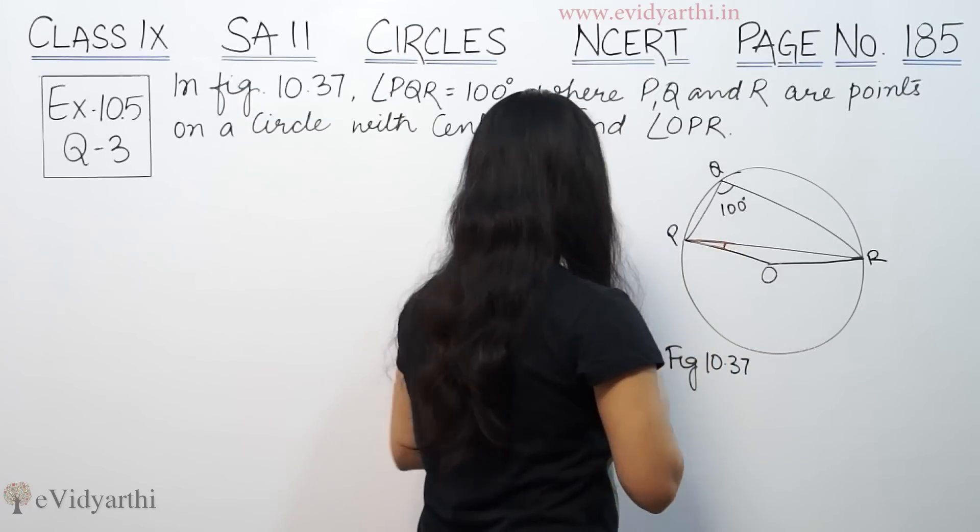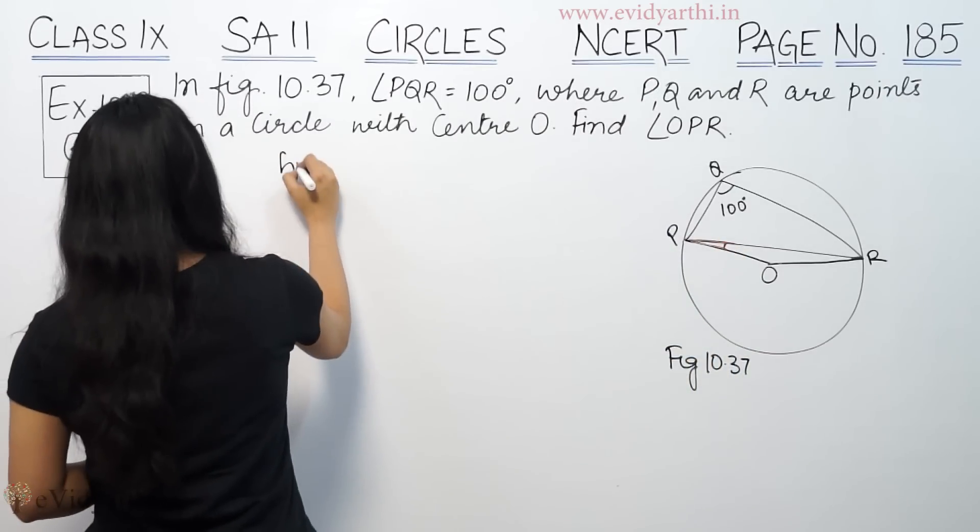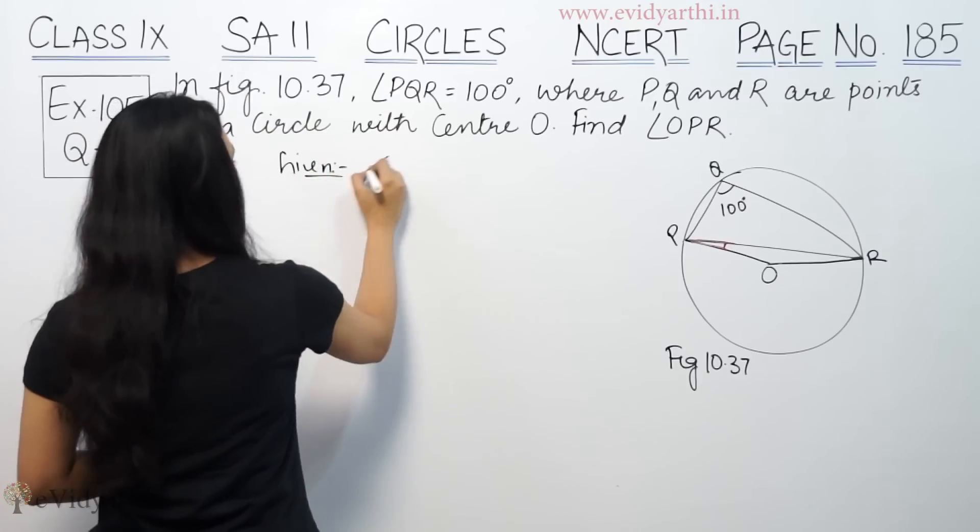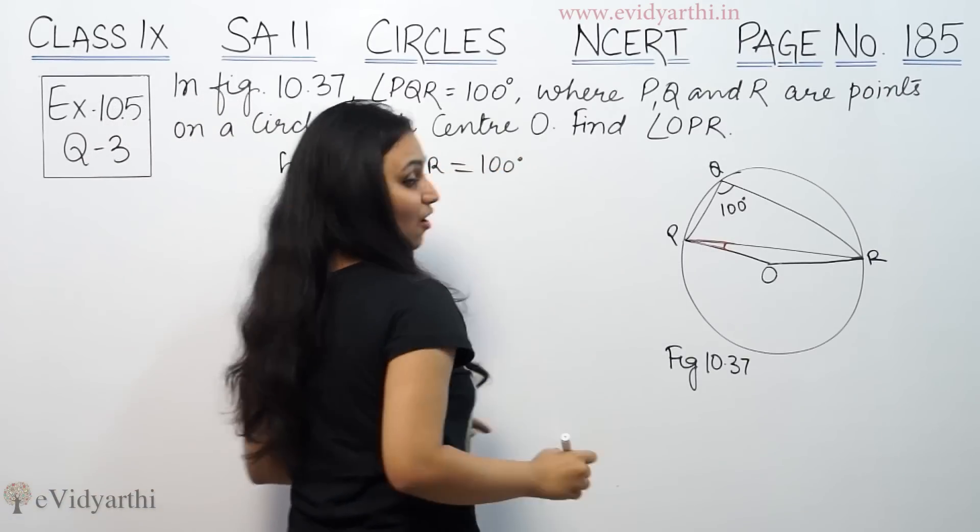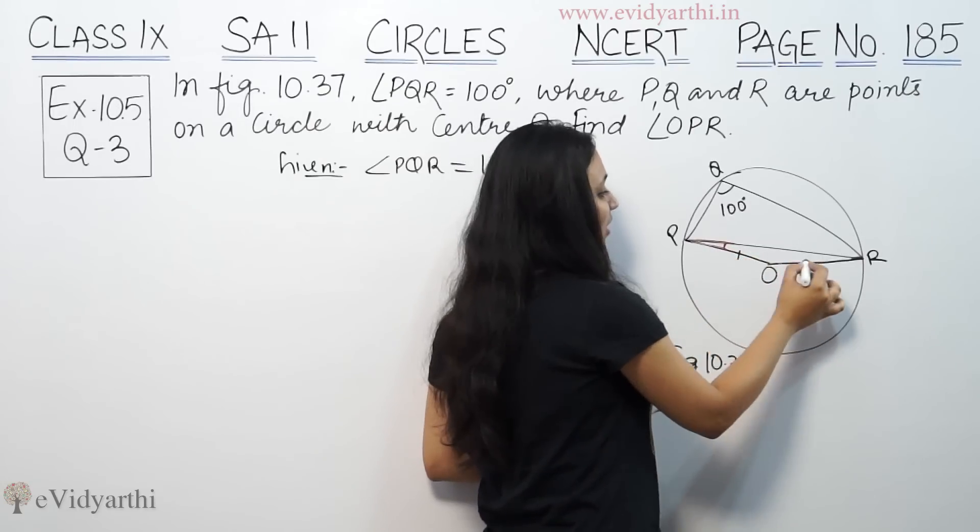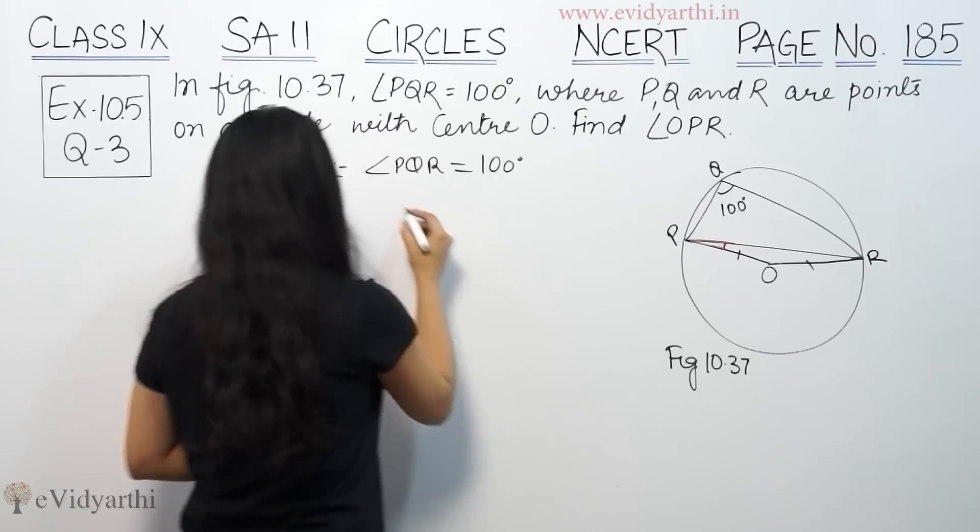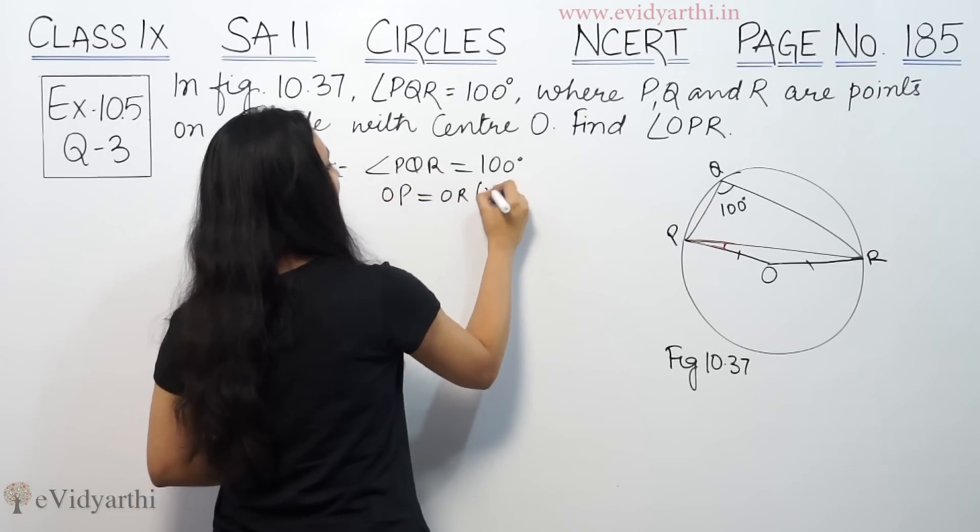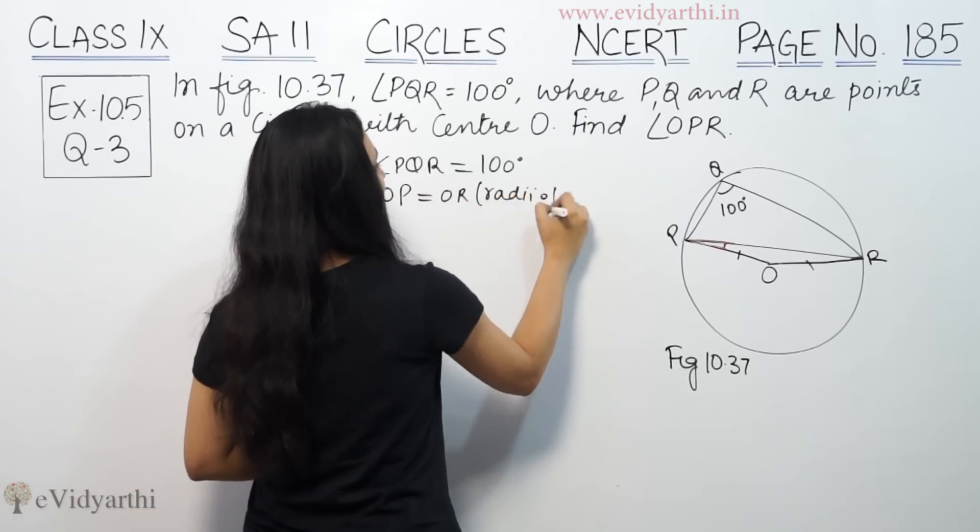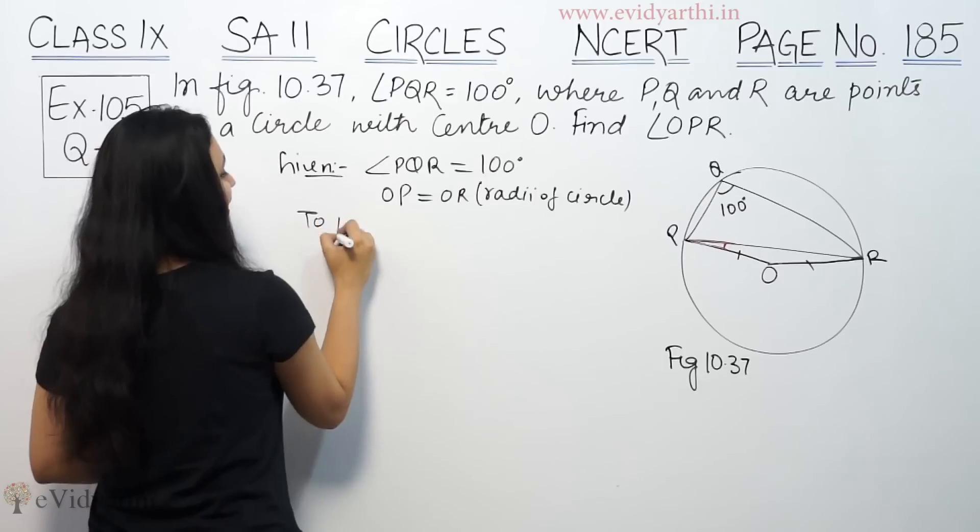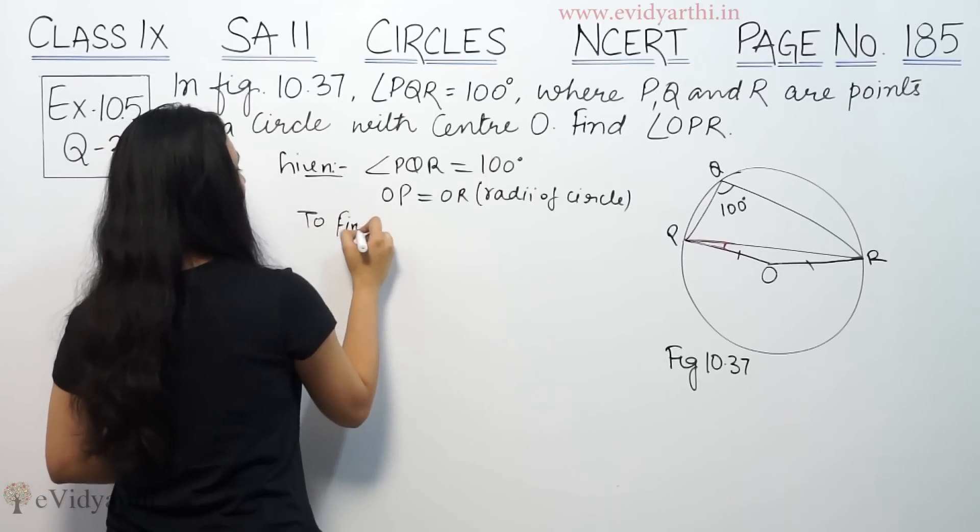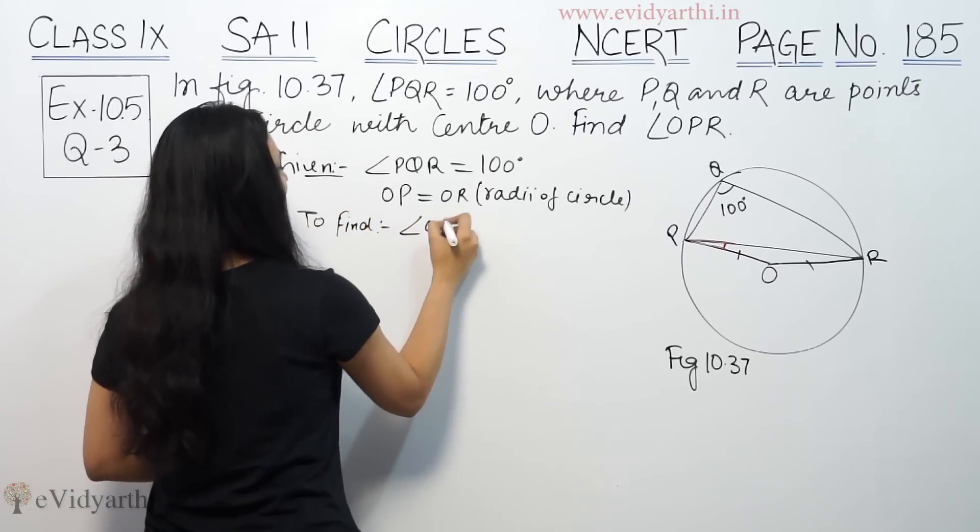So, now we know given is angle PQR, this is 100 degrees. And these two radii, OP and OR, so all of them are equal. OP is equal to OR. PQR of circle. We have to find angle OPR.